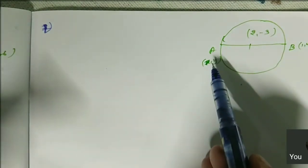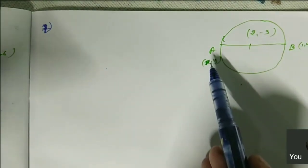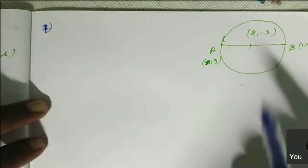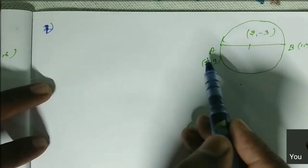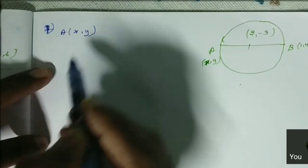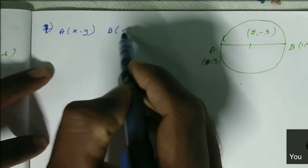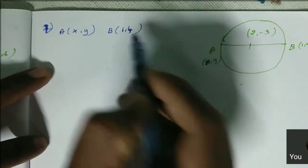We need to find the coordinate of A. The coordinate of A is nothing but (x, y) of A. So it is very easy. Here, A point we just consider as (x, y), then B point is (1, 4).